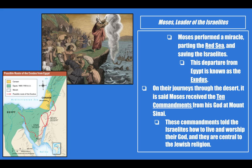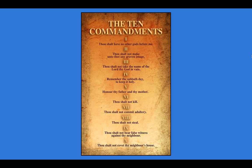Following the Exodus, on their journeys through the desert, it is said that Moses received the 10 Commandments from his God at Mount Sinai. These commandments told the Israelites how to live and worship their God, and they are central to the Jewish religion. This picture shows Moses closing the sea back up, and you can see the Egyptian army drowning. This other picture shows possible routes of the Exodus from Egypt — where it is suspected they went, eventually up into Canaan. Here are the 10 Commandments, which are the commandments that the Jewish people have agreed to follow.